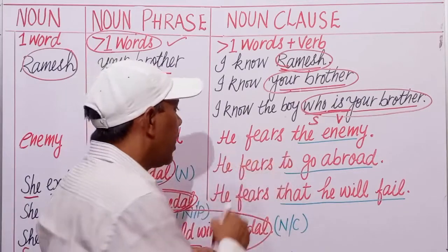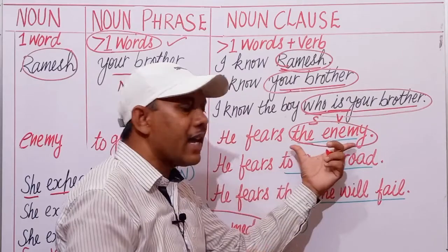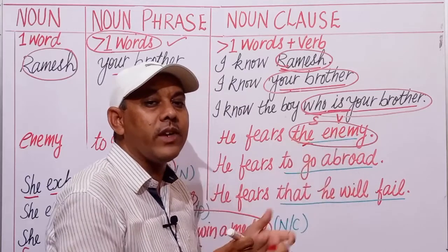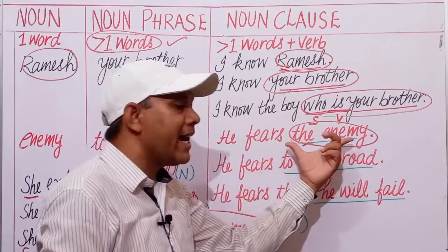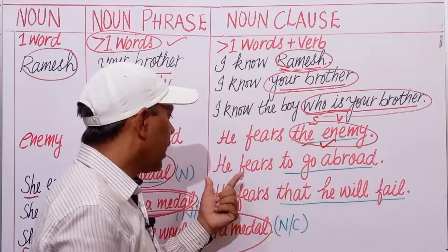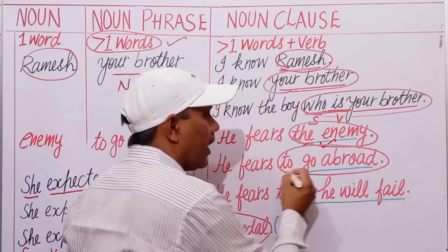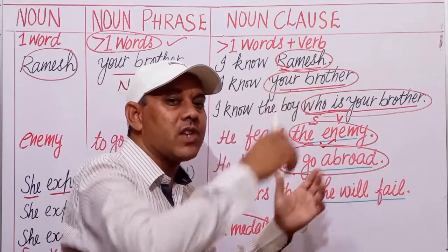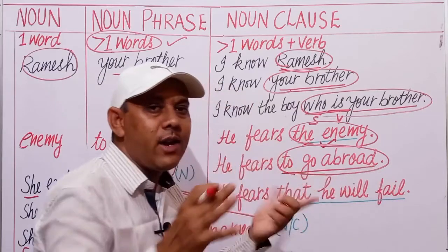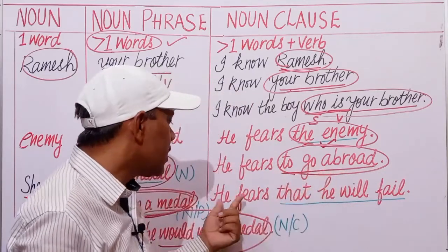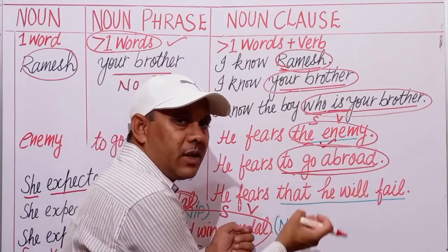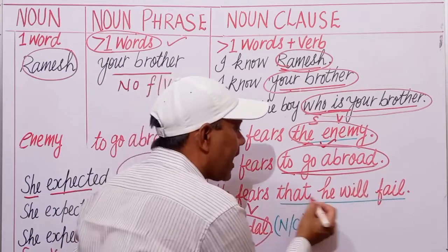Next example: 'He fears the enemy.' 'The' is an article used before a noun, so 'enemy' is a noun. He fears someone — he fears a noun. Now replace this noun with a phrase: 'He fears to go abroad.' This phrase has no finite verb, that is why this is a phrase. Next: 'He fears that he will fail.' Again, subject-verb combination — 'that he will fail' is a subordinate clause acting as a noun clause.